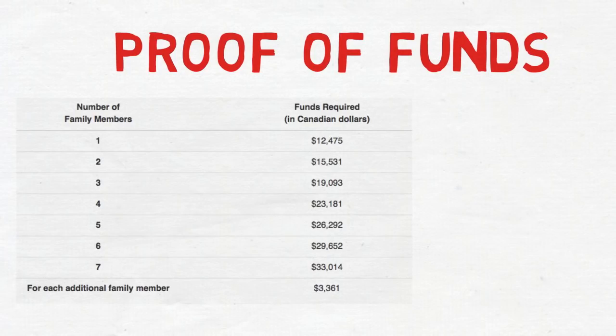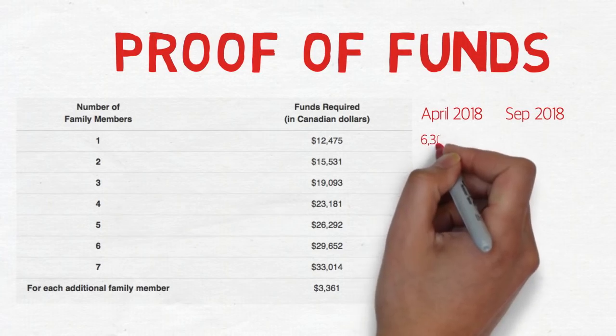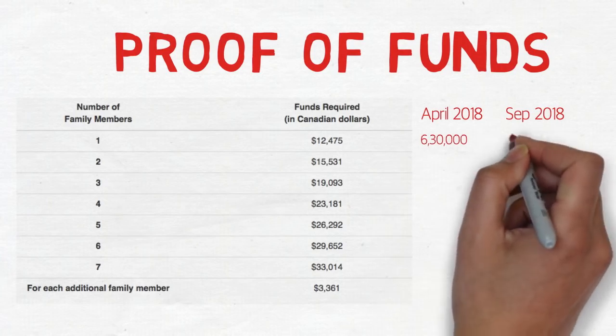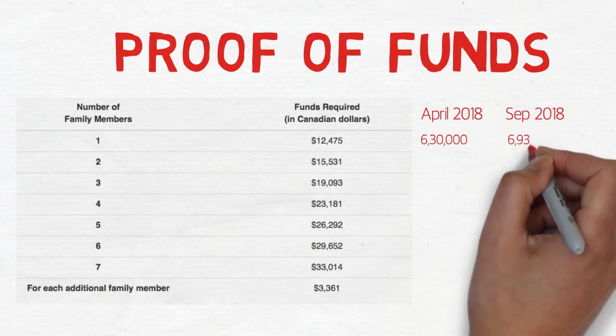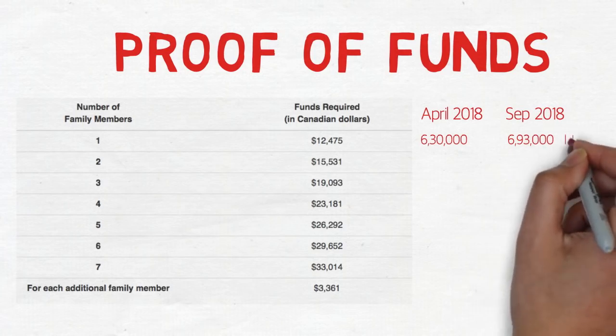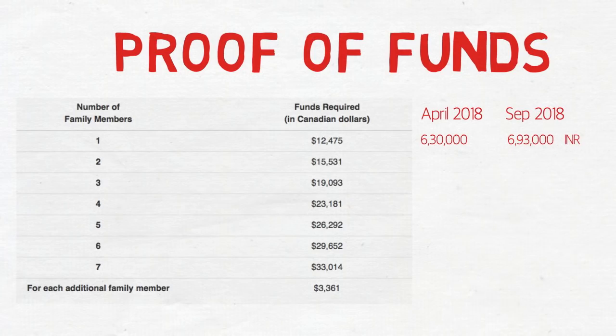If you belong to India, I've made a matrix here. In the month of April at the rate of 50.5 rupees foreign exchange rate, you needed to have around 6 lakh 30,000 rupees. But now it is 10% more, which is around 7 lakh rupees.